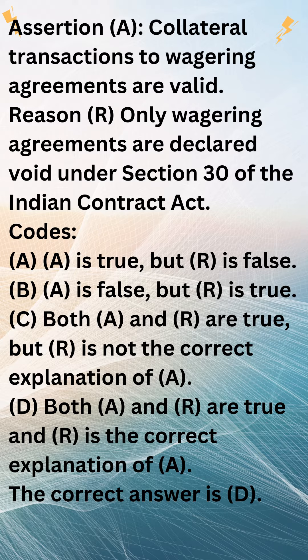Reason R is also true. Section 30 of the Indian Contract Act declares wagering agreements to be void. However, the section does not say anything about the validity of collateral transactions to wagering agreements. Therefore, both A and R are true and R is the correct explanation of A.